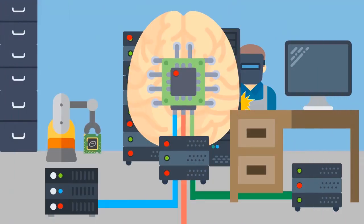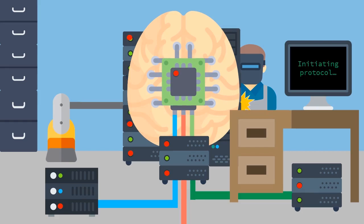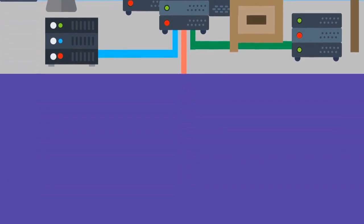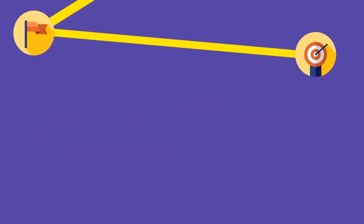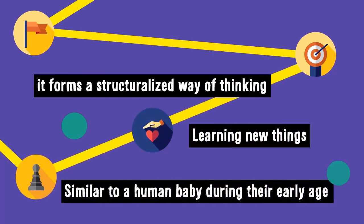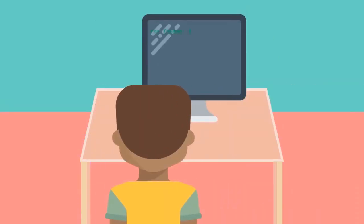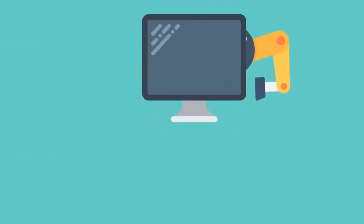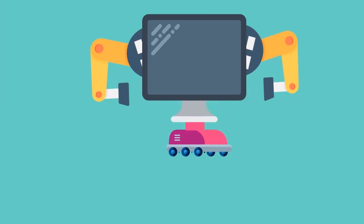Recently, many scientists all around the world have been developing a new way of data processing, and it's called the artificial neural network. How it works basically is that it forms a structured way of thinking based on experience, just like what a human brain does. This way, programmers won't have to hard-code programs to the machine. Instead, the machine can learn what to do by themselves.